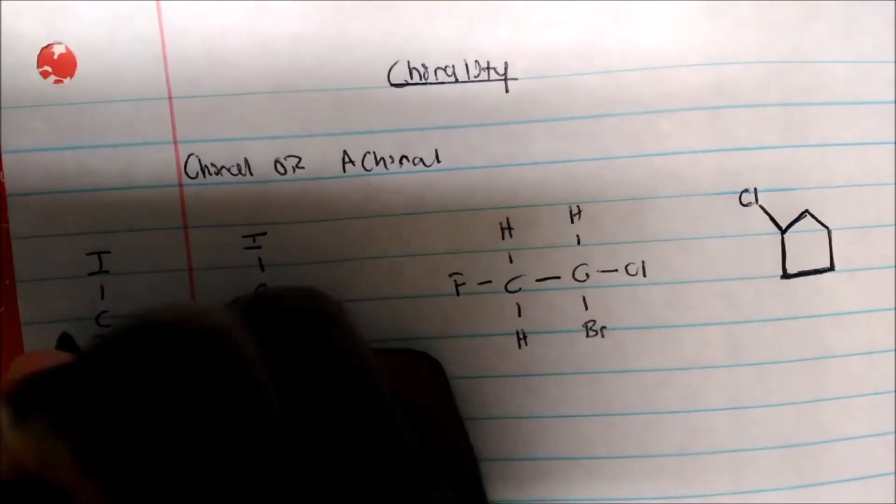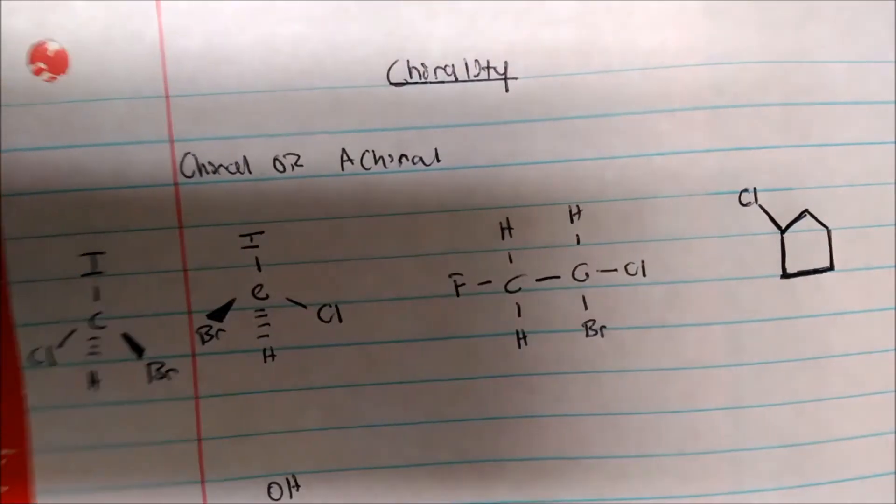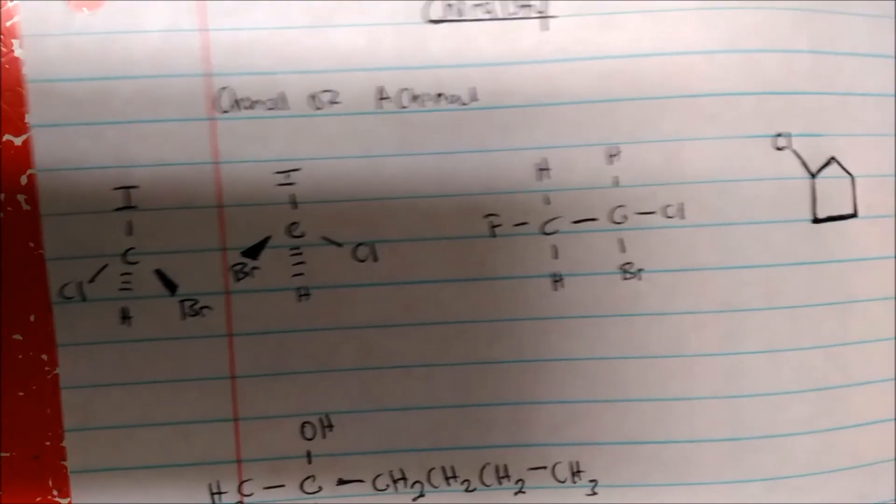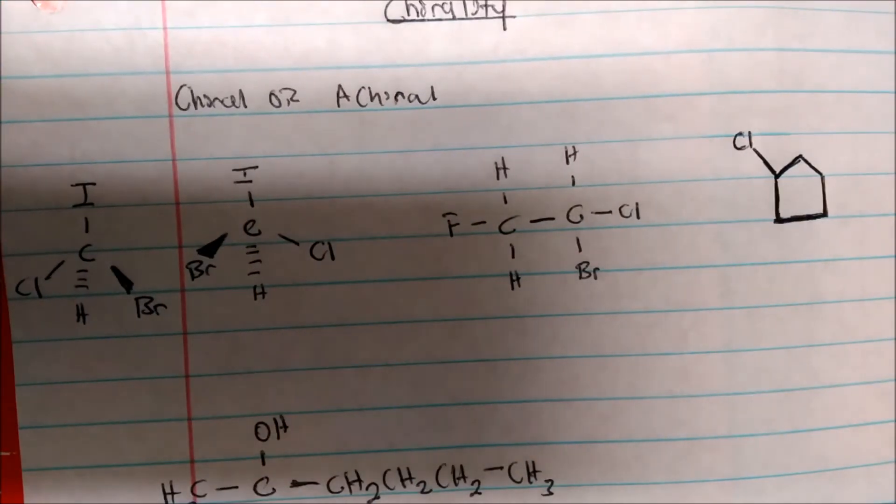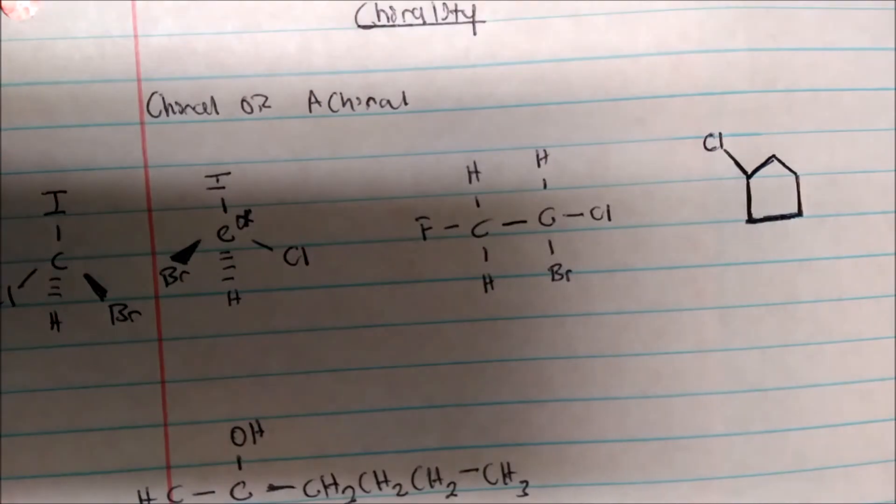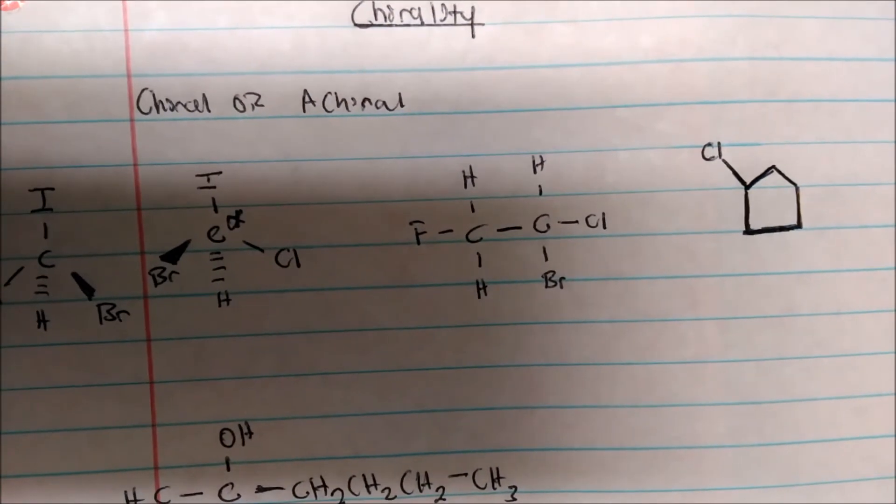Hydrogen will still be coming down, and our chlorine now will be on this side. And the basic idea is that no matter how you flip these two molecules, they will never be the exact same. So, in fact, this is my chiral center, and that is a chiral molecule, or a chiral atom.